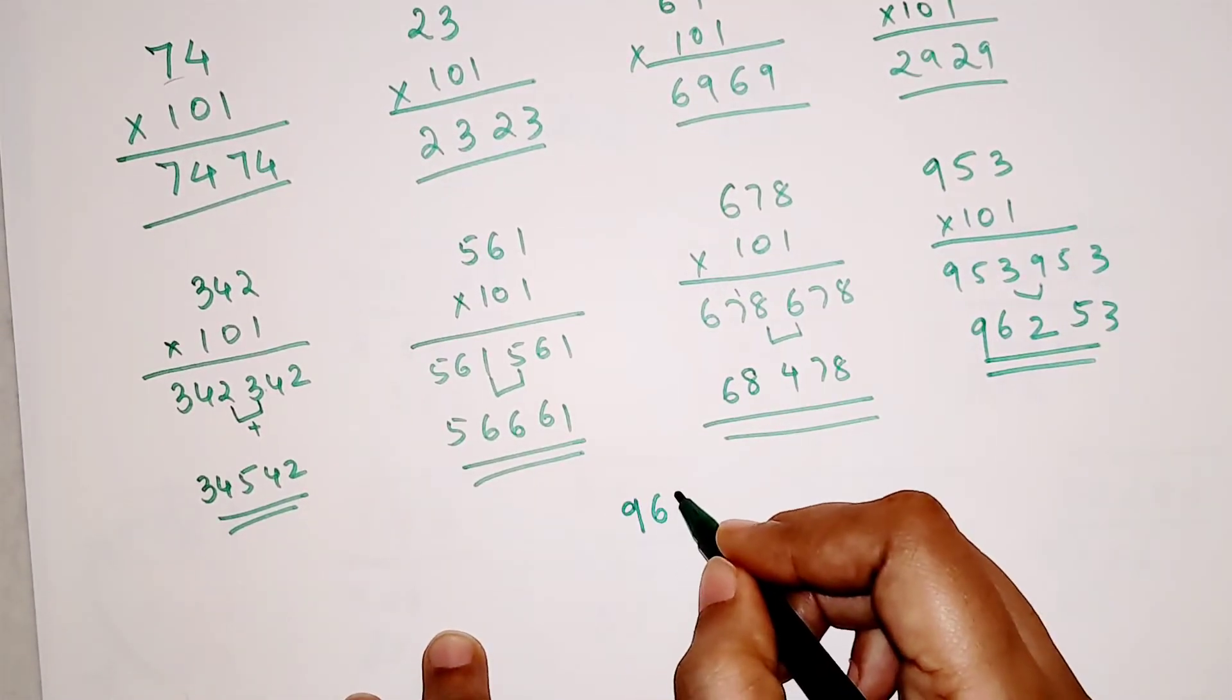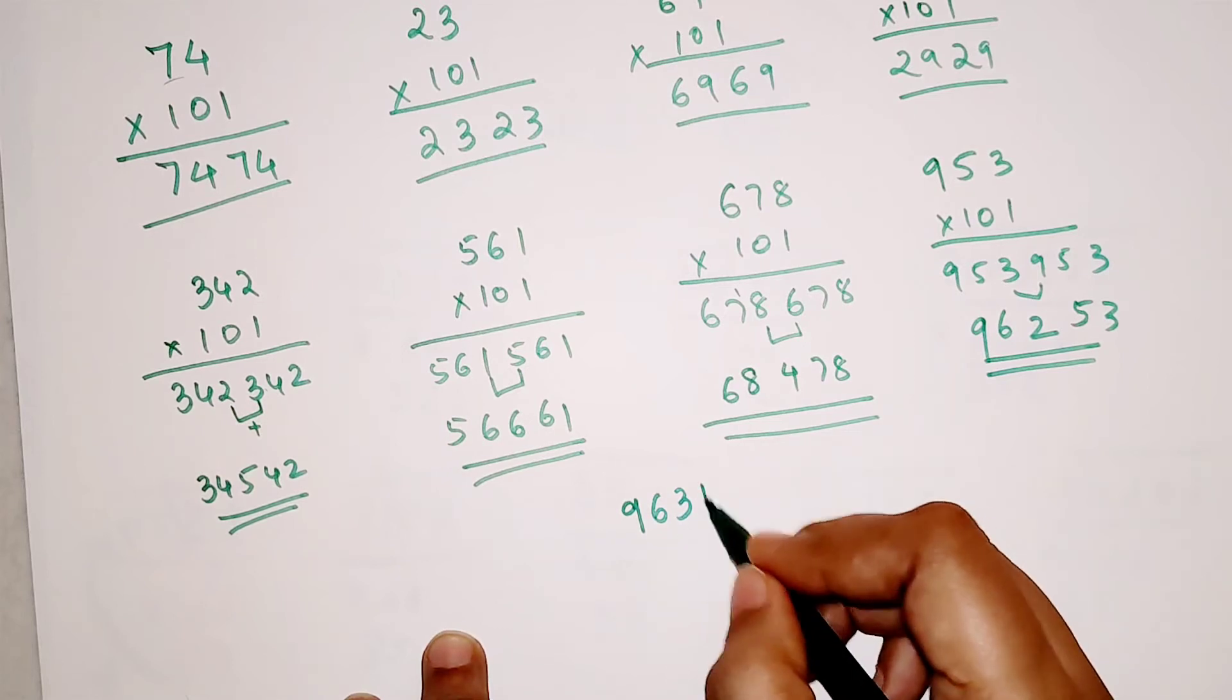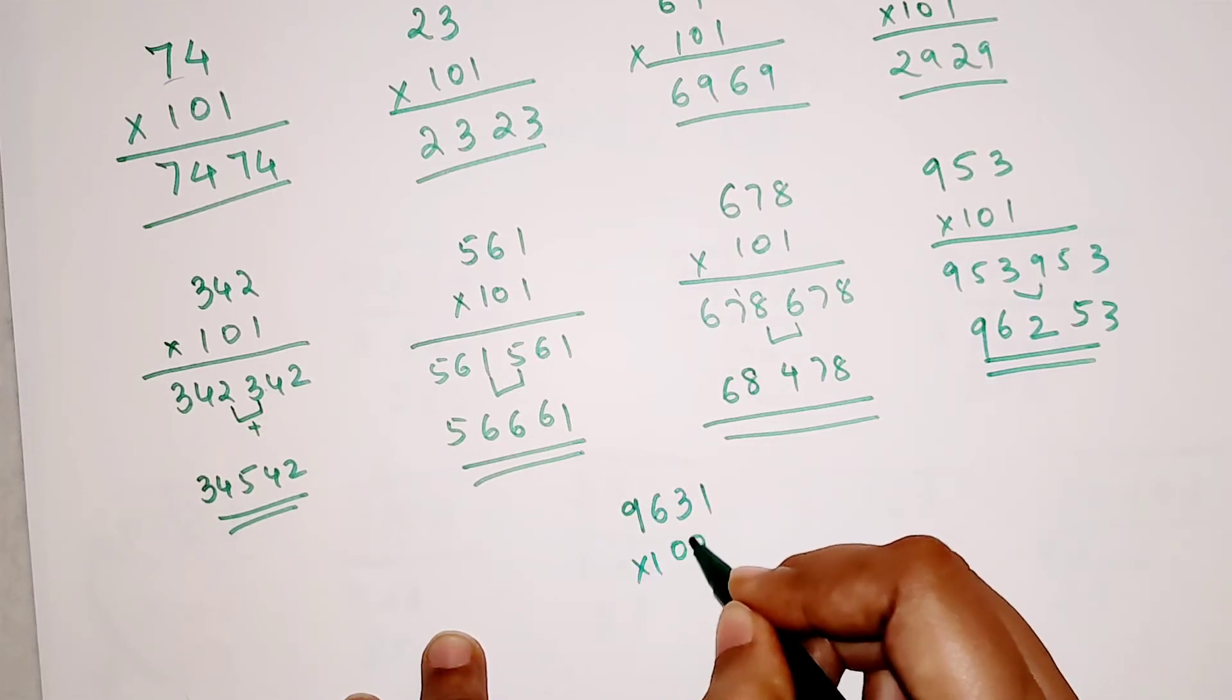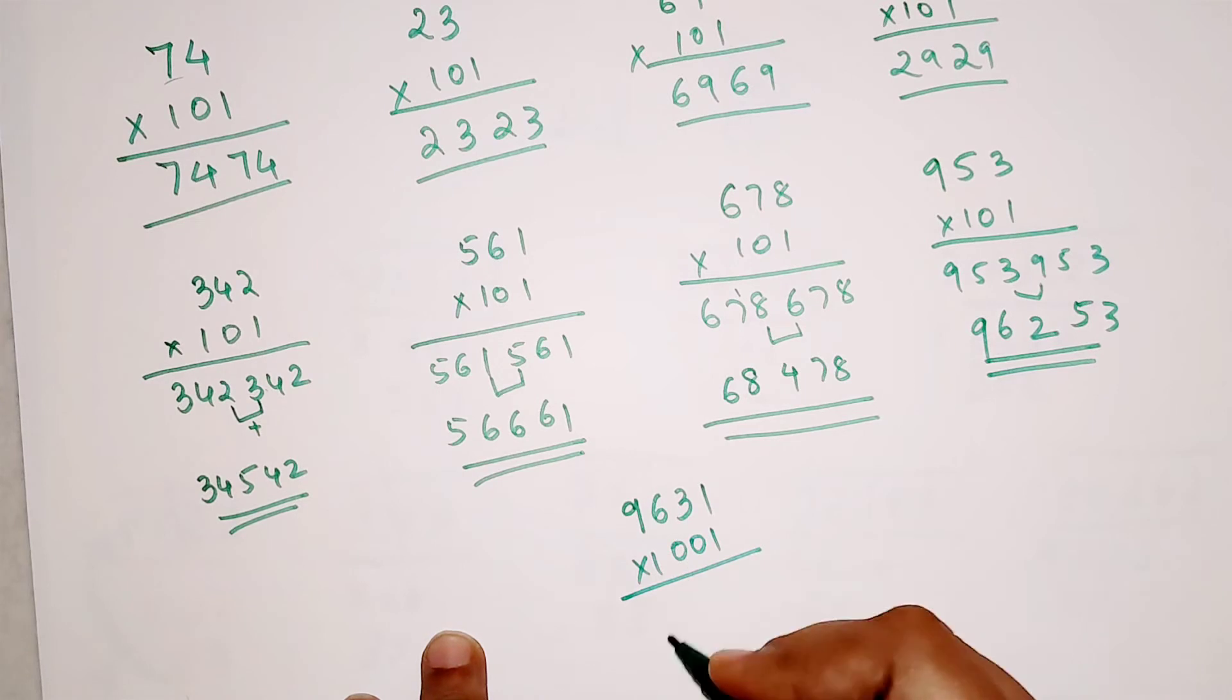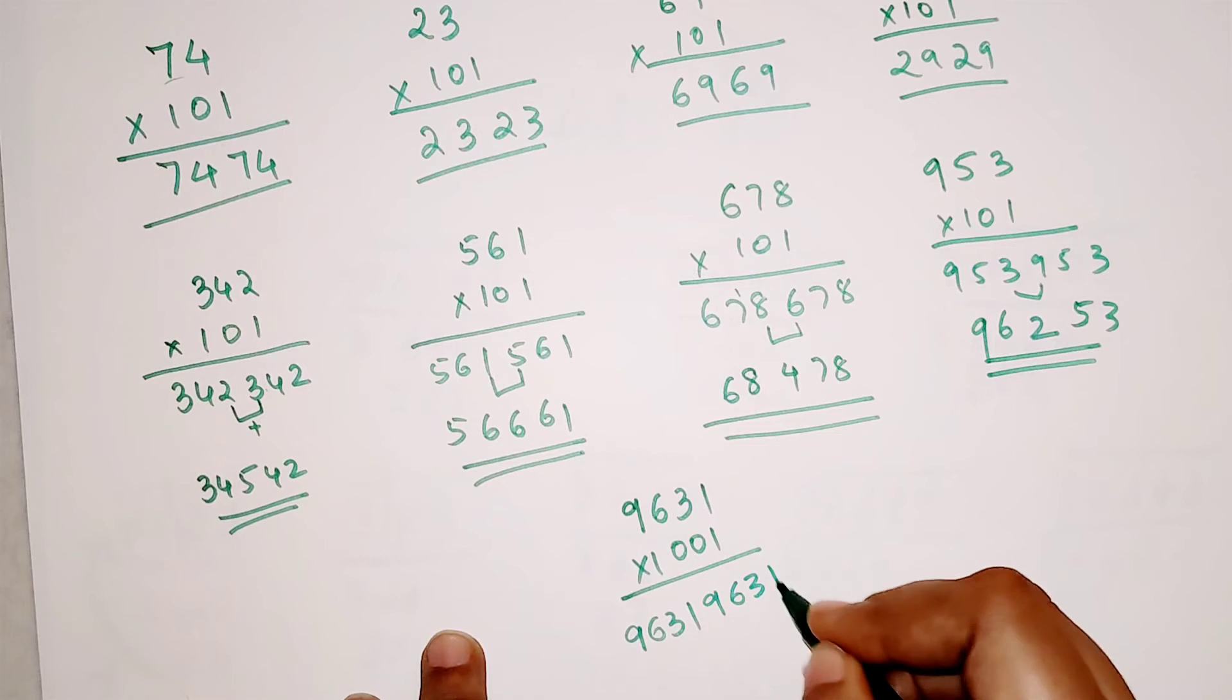In that case if this is 963 into 1001, your answer then changes to 963, 1, 963, 1. But since the digits are same, we are adding these 2.